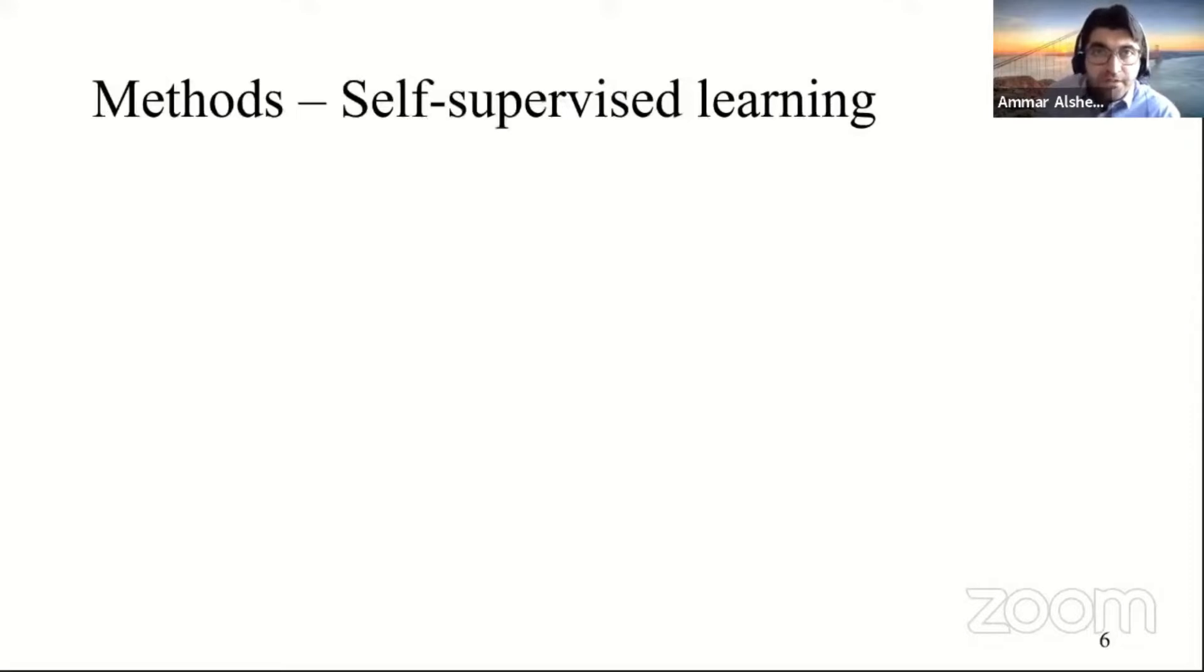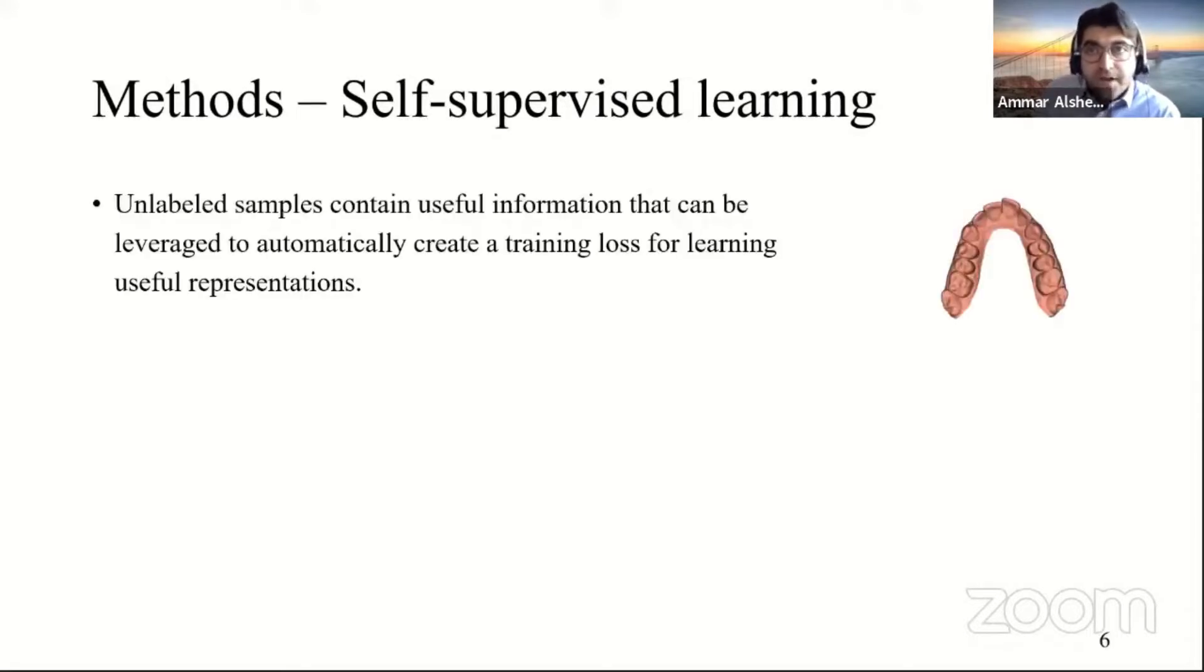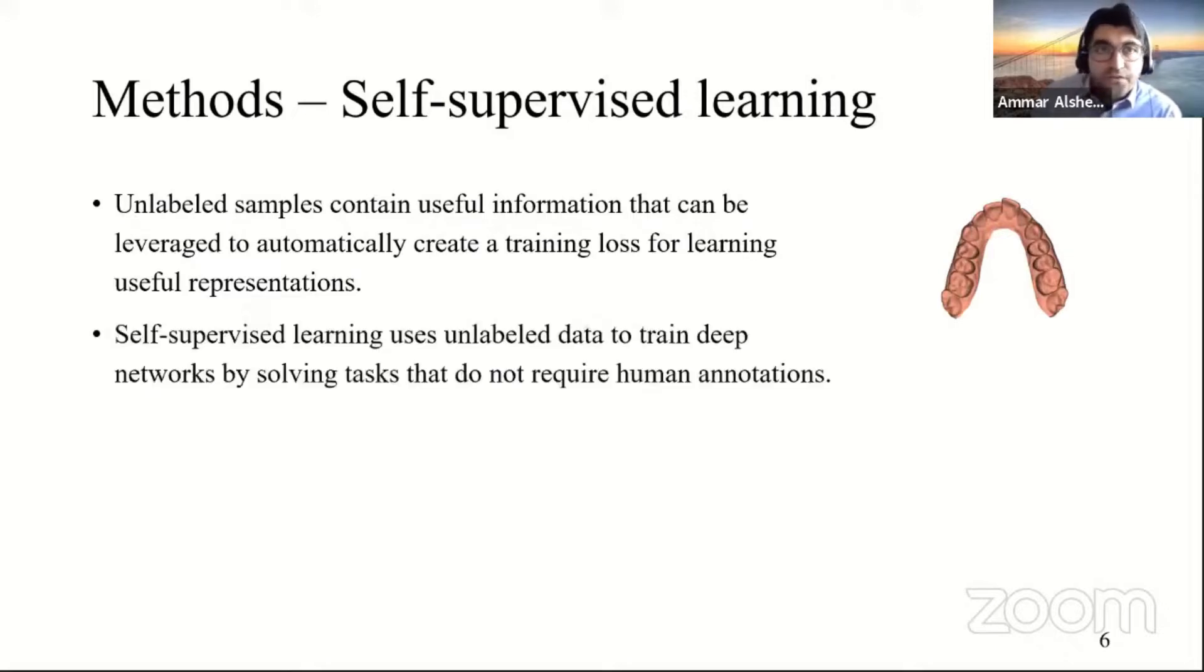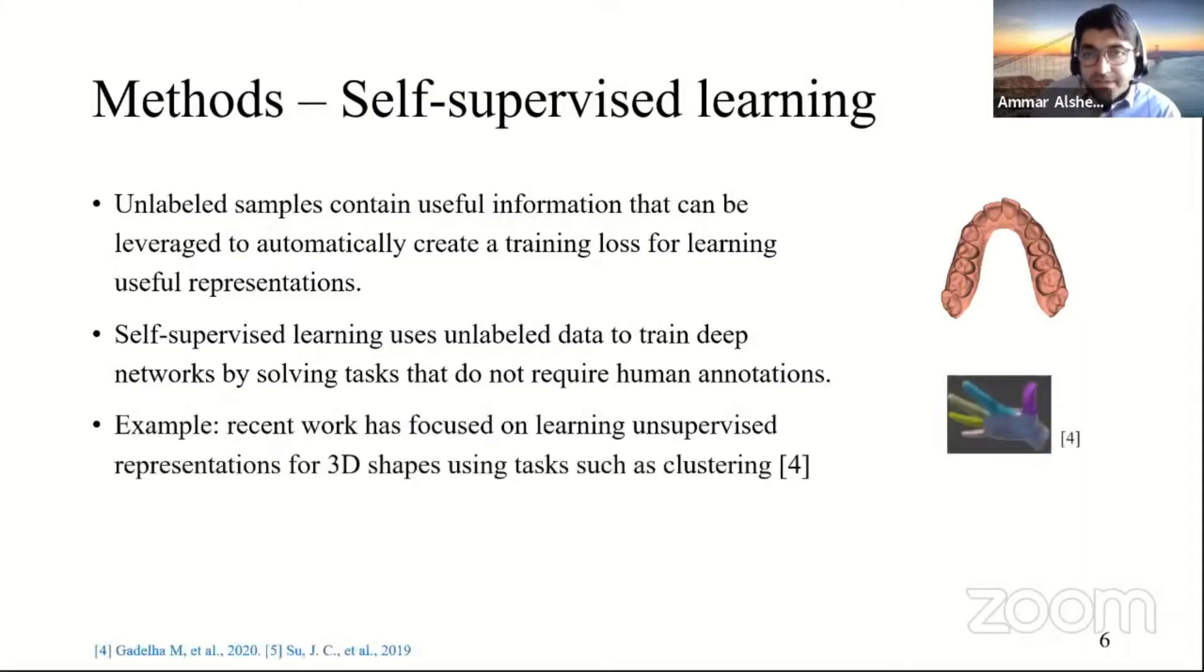So what is self-supervised training? Unlabeled data still contain a lot of information that we can leverage automatically to create some training loss to learn useful representation. And this is the idea of self-supervised learning: to use unlabeled data to train deep learning networks by solving tasks that do not require human annotation. An example is shown in this picture where a recent work focused on learning unsupervised representation of 3D shapes using tasks such as clustering.